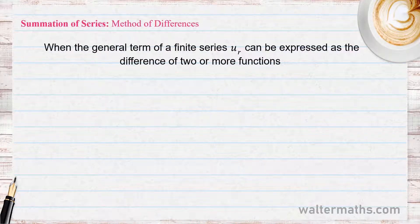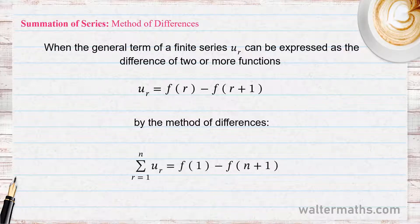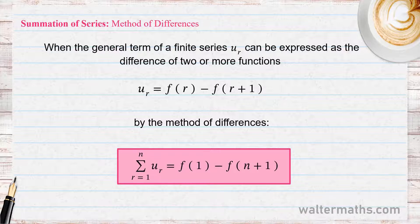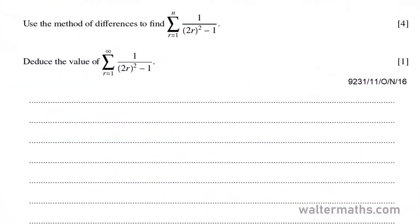In general, when the general term of a series can be expressed as the difference between two functions, the method of differences gives the summation from R equals 1 to N of U sub R equal to F(1) minus F(N+1). Now we're going to look at an example using the method of differences to find the sum of a series: find the summation from R equals 1 to N of 1 over (2R² − 1).